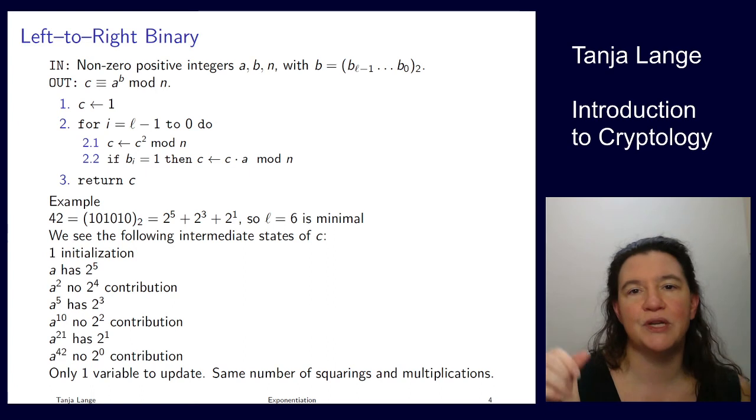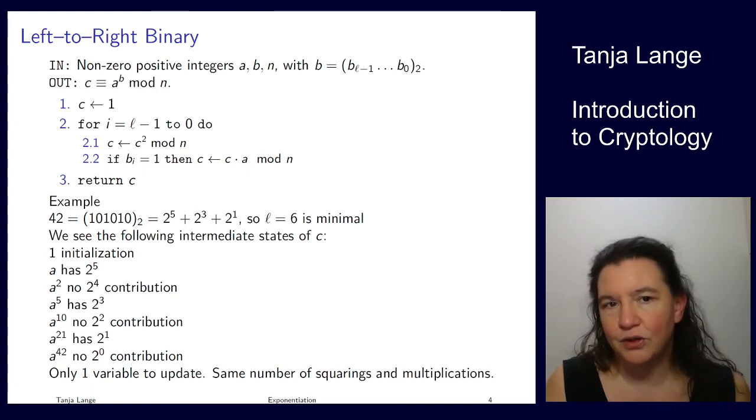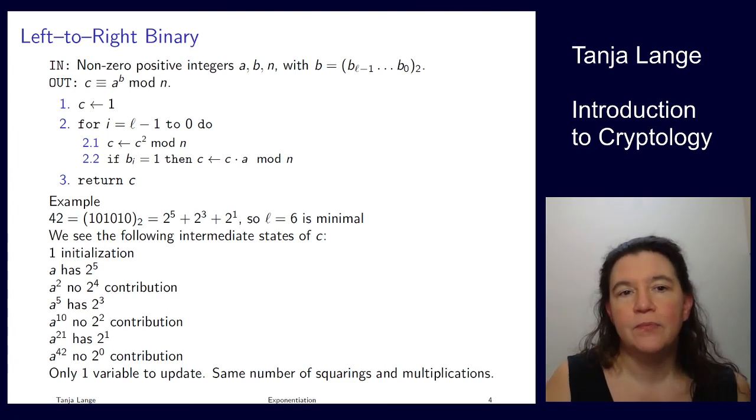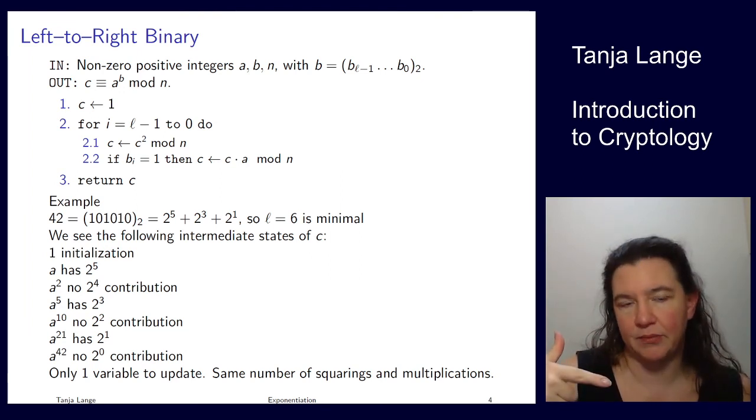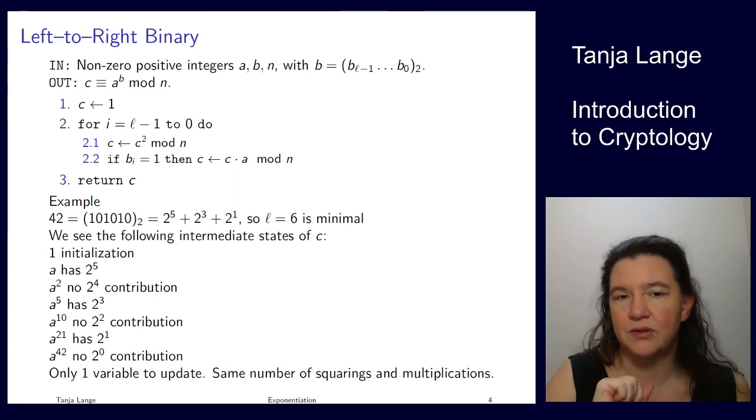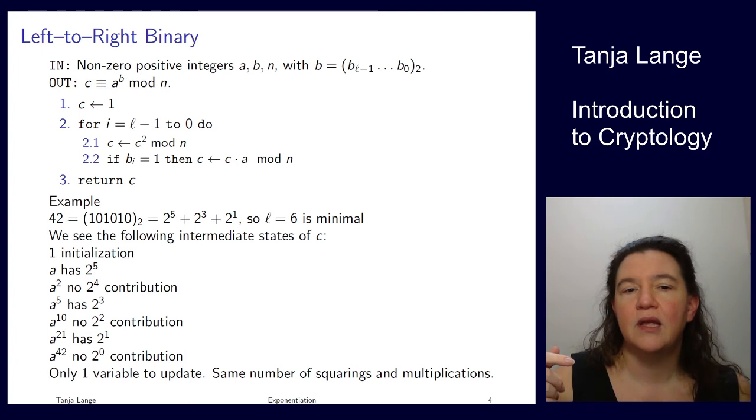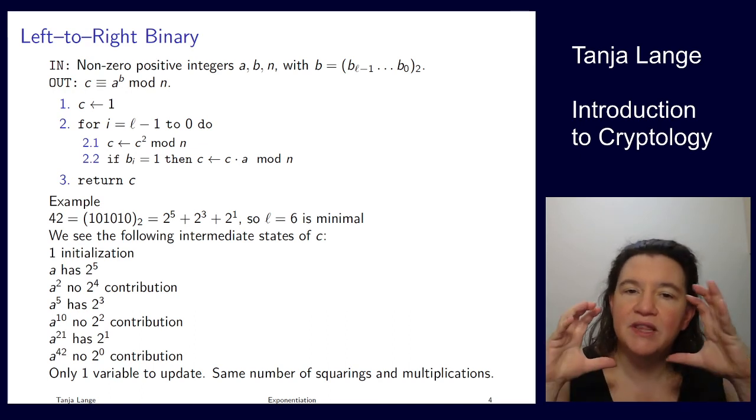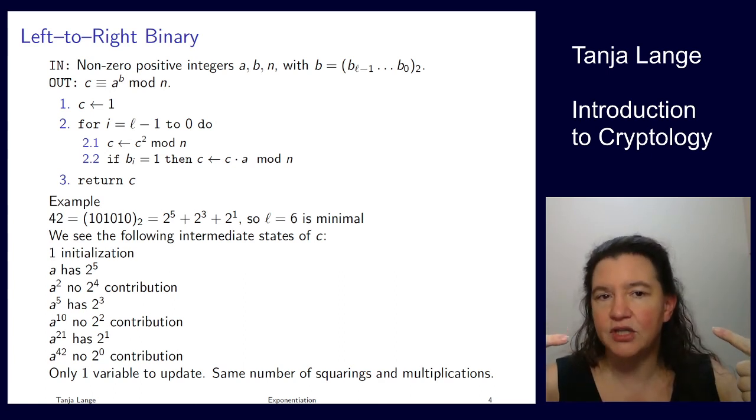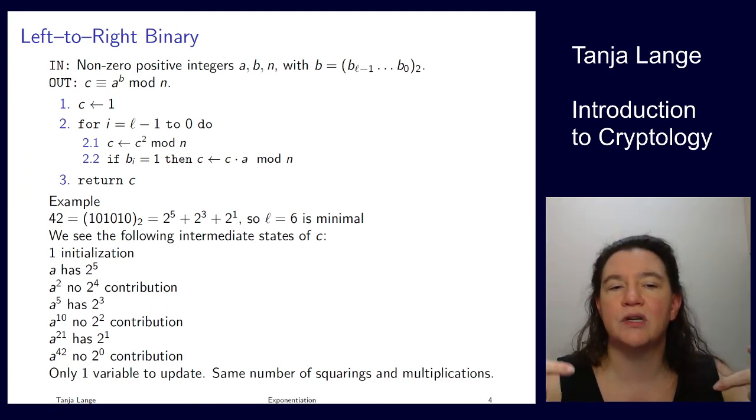So here we're starting with the same situation. So we again have a binary representation. I'm again using 42, so no changes there. I'm only initializing c to be 1, so there's no temporary variable t. And then again in each step I'm squaring something and I'm multiplying something. Now this is taking the top bit first. So we're now starting at l minus 1, so 5 in our case, and going down to 0. So that's the difference here. So that's why it's left to right. So we're scanning the bits, and if we see a bit that is 1, then we multiply with a, so not with any power of a, but just with a itself. But then this thing that we have achieved, the c, that one gets squared. So we're going to see a 2 to the 5 appearing eventually by this intermediate result, which is c times a, getting squared five times.